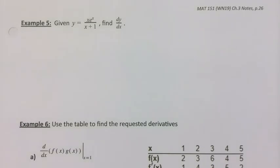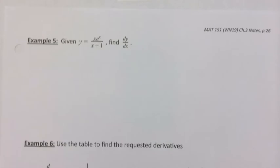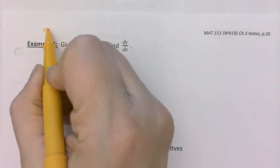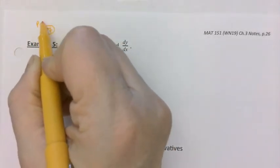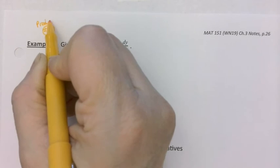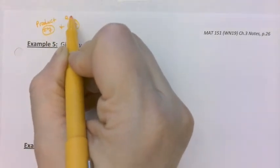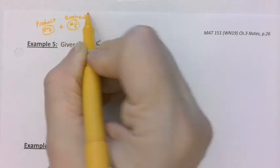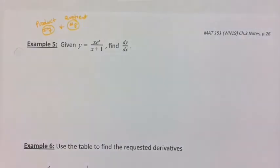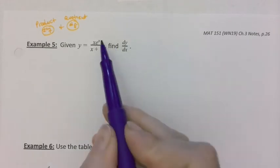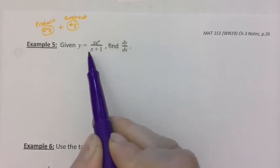So this particular problem is going to use both rule number 7, the product rule, and rule number 8. I'll use both the product and quotient rule. We start off with the quotient rule — the quotient rule is the bigger idea here because we have a big fraction.